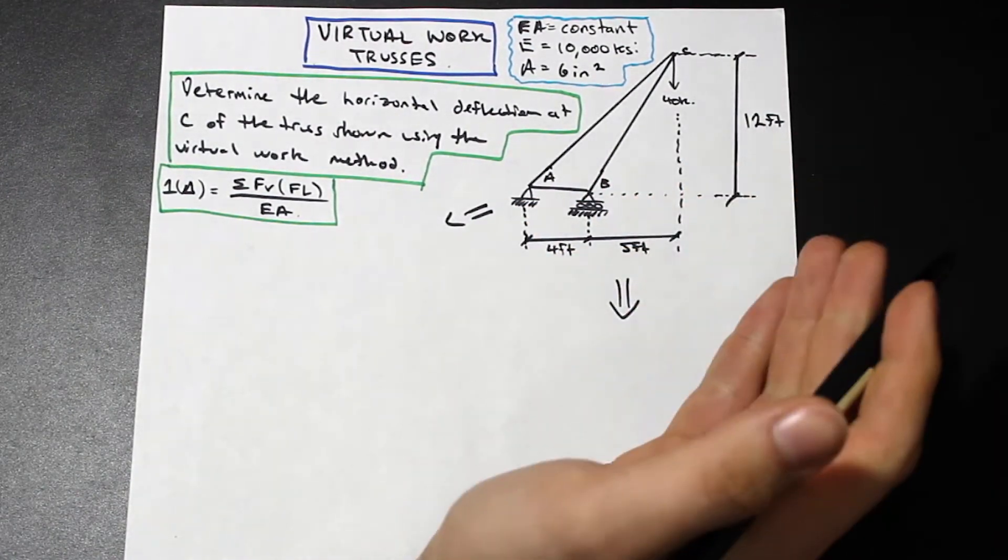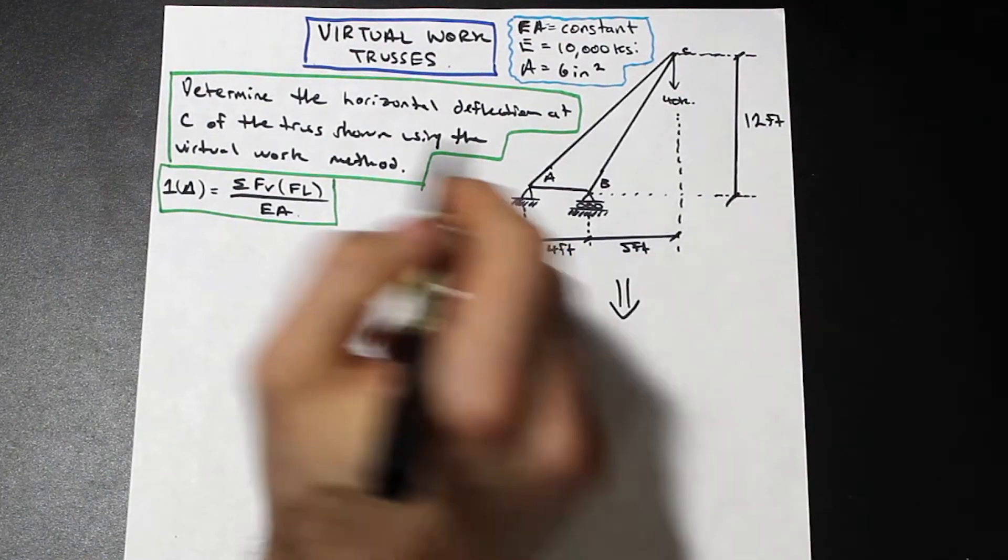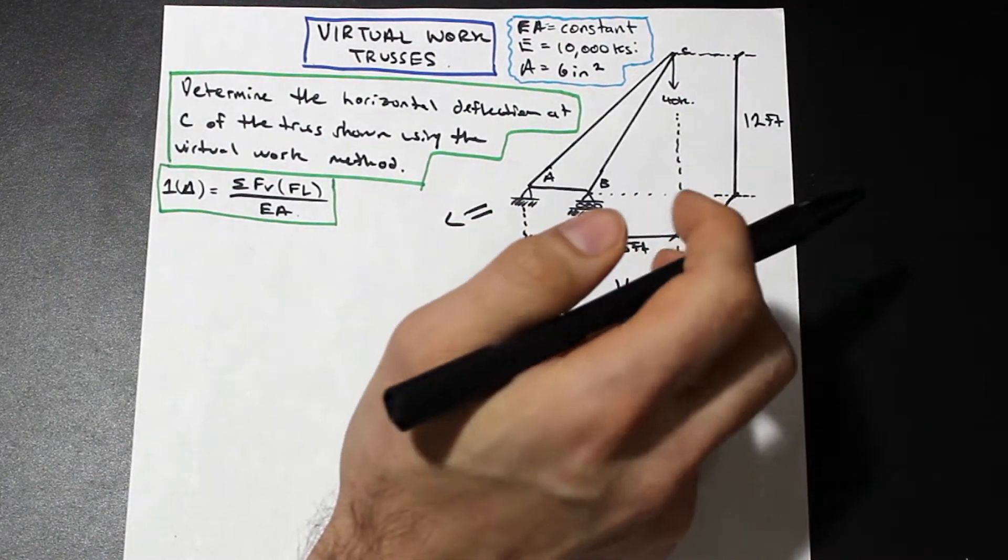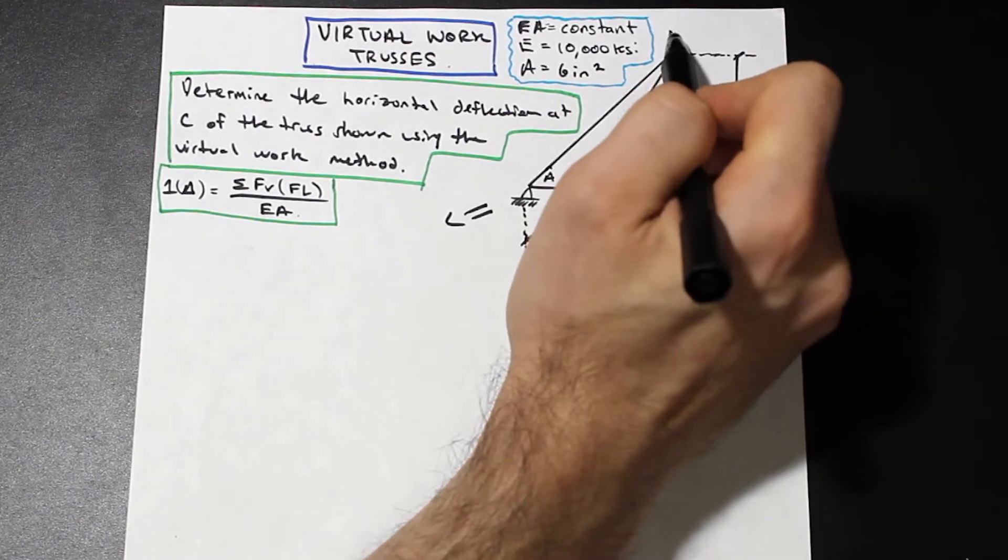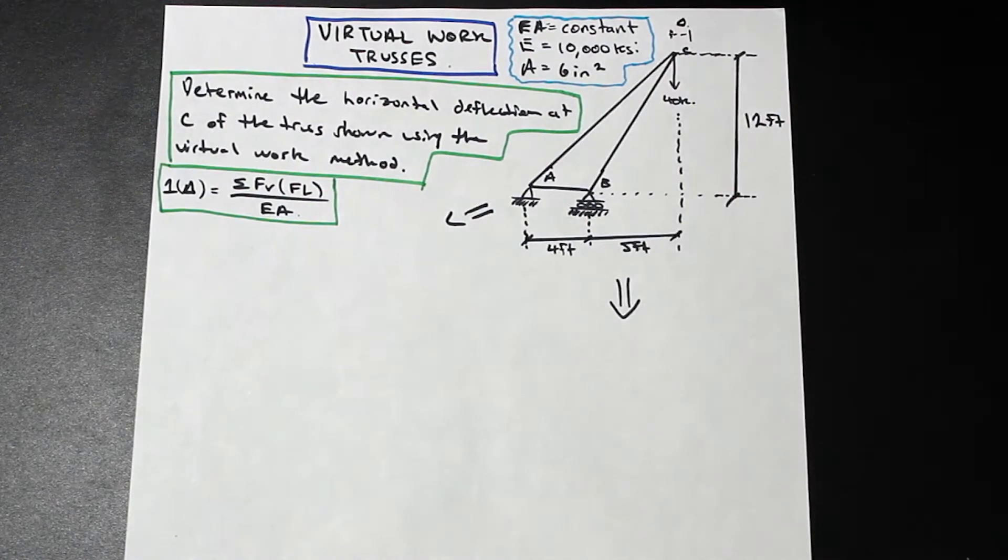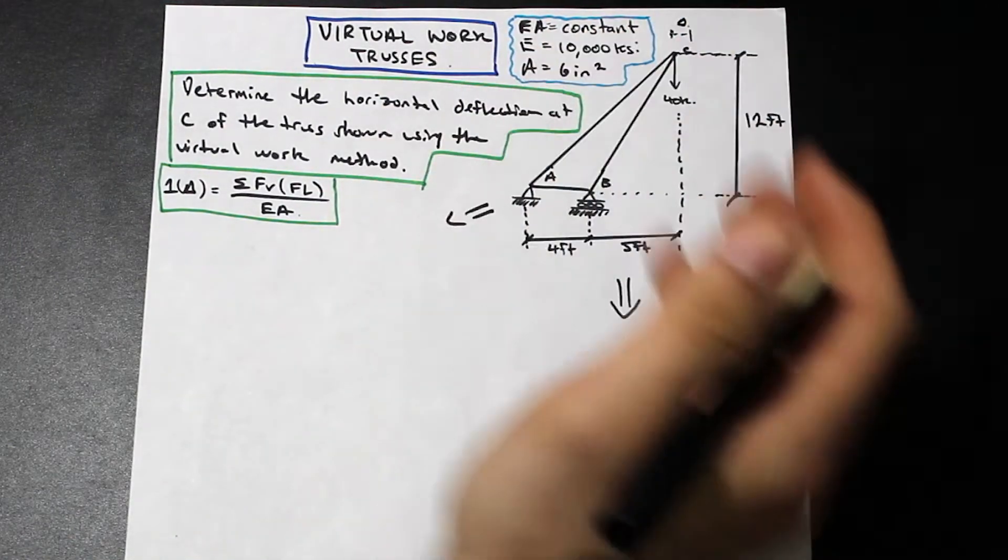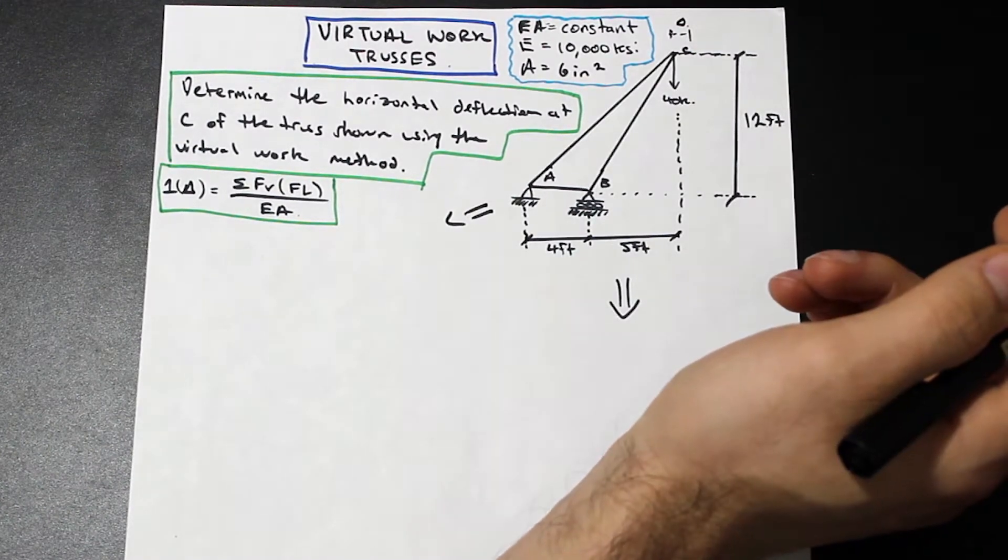Let's take a look at this problem. We're asked to determine the horizontal deflection at C of the truss shown using the virtual work method. How much is this deflection at C due to the loading that's given here, which is simply just 40 kip down. Let's get started.